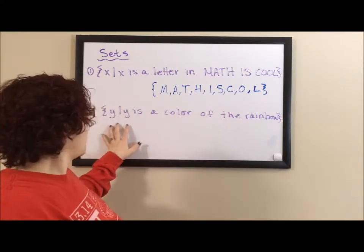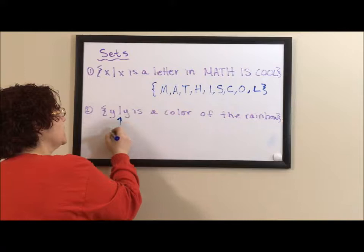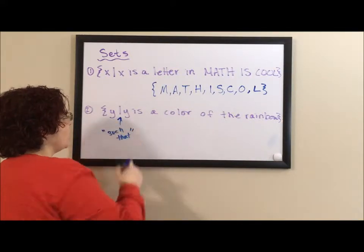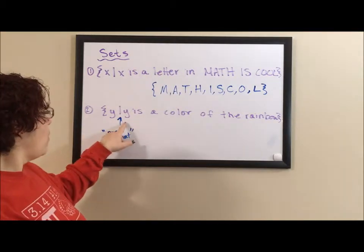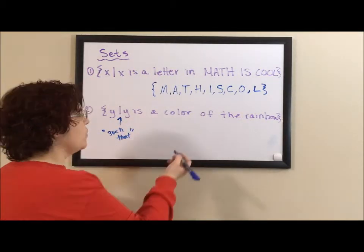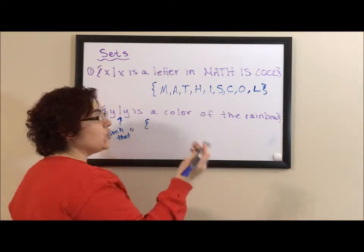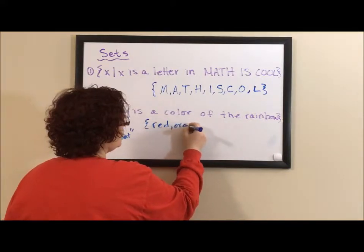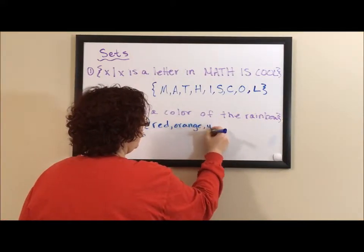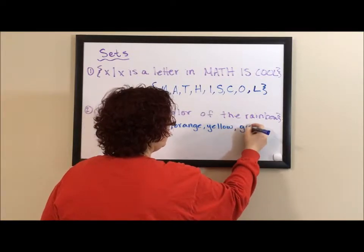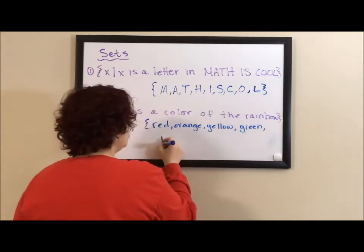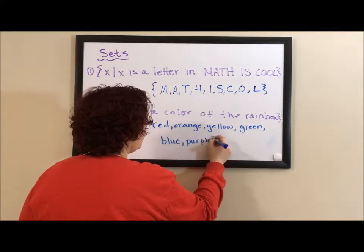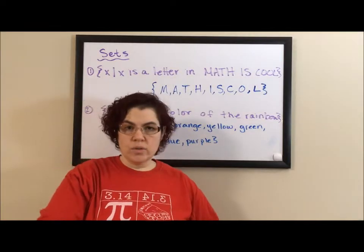For the next one: y, such that — this line translates to 'such that' — y such that y is a color of the rainbow. For this one I start with my curly bracket, then a comma-delimited list: red, orange, yellow, green, blue, purple. I could do a more extensive list but I'm going for the basics.